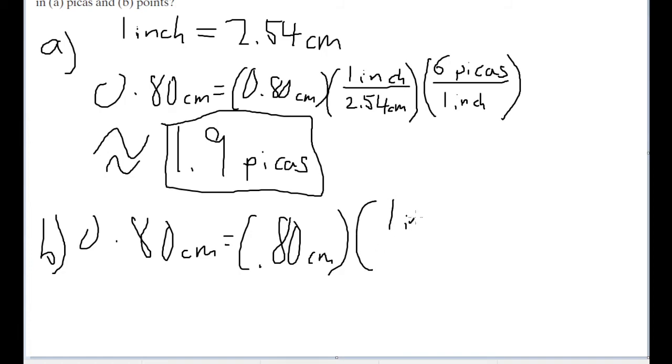So that's 0.80 centimeters. It's equal to 0.80 centimeters times 1 inch over 2.54 centimeters times 6 picas over 1 inch.